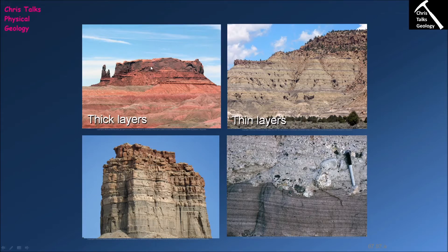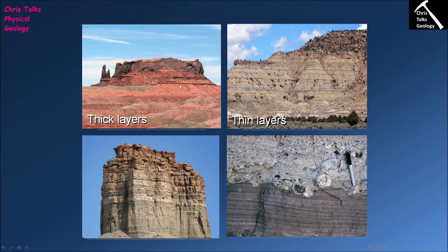The very thick layer and the sequence of multiple thin layers below it appear to be the same rock type, suggesting deposition in the same or similar environment. A very thick, laterally extensive layer with defined upper and lower margins can be classified as a formation. The sequence below also has a sharp boundary at the top and likely one at the bottom, so it too would be classified as a formation.